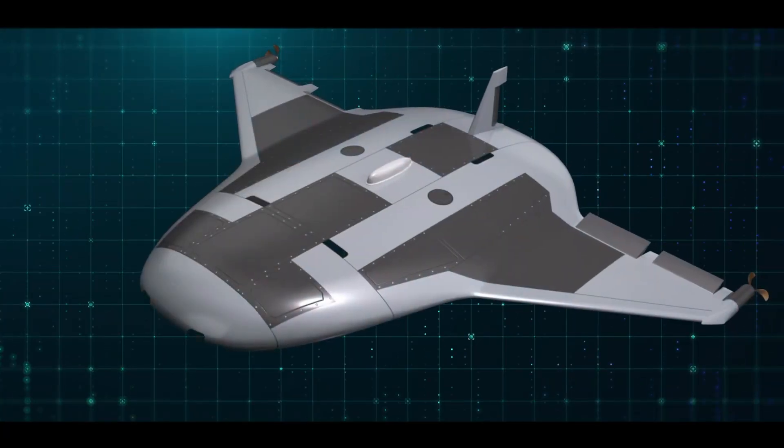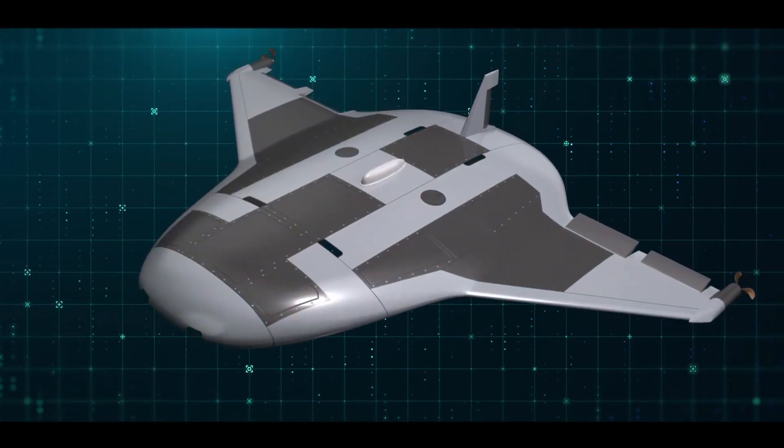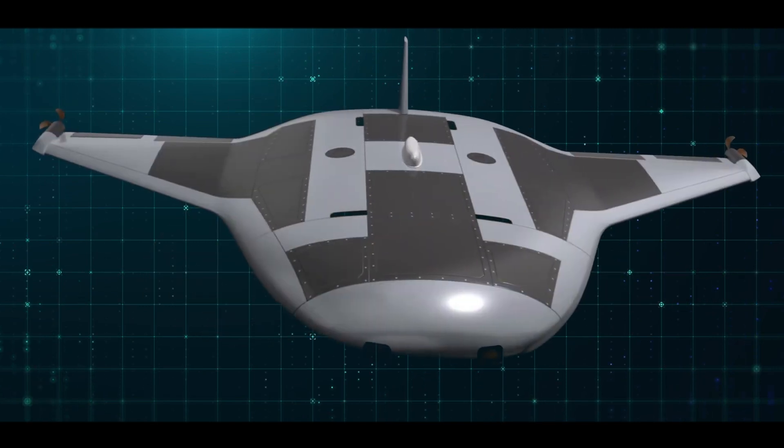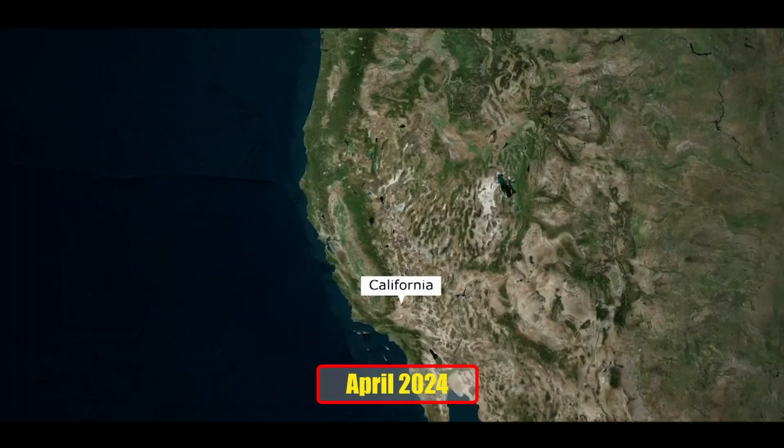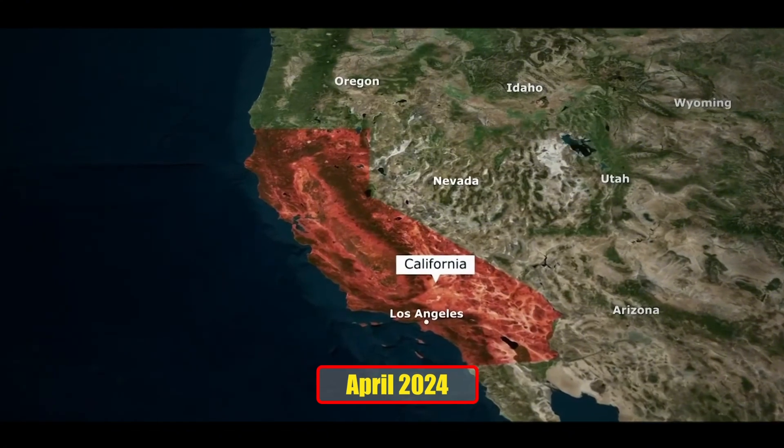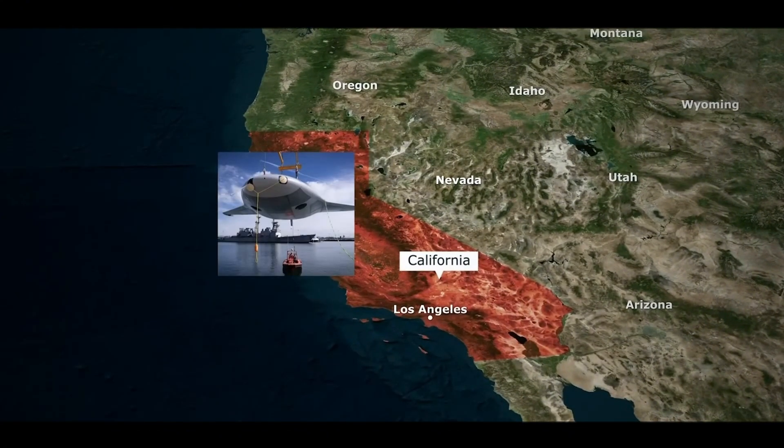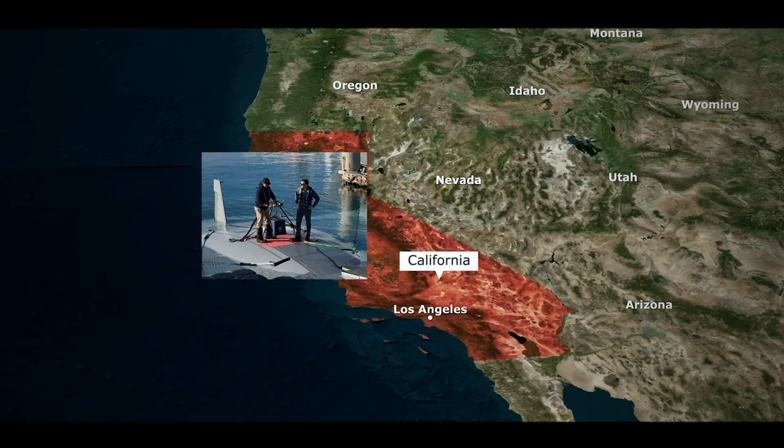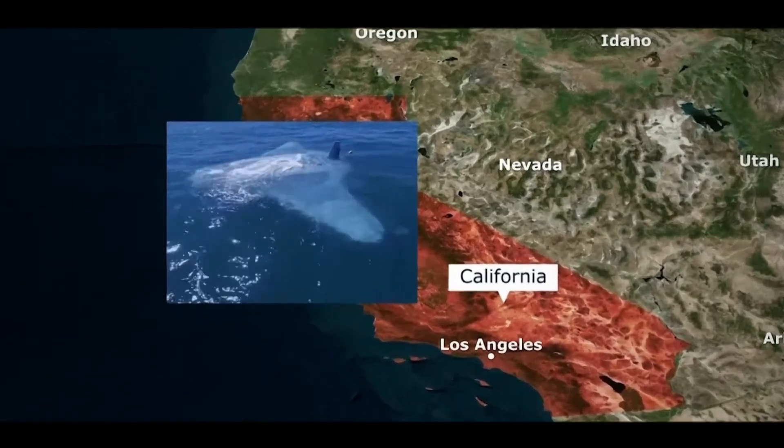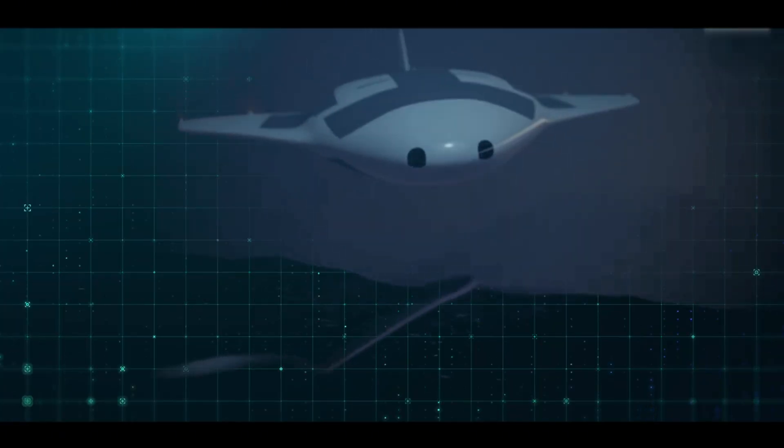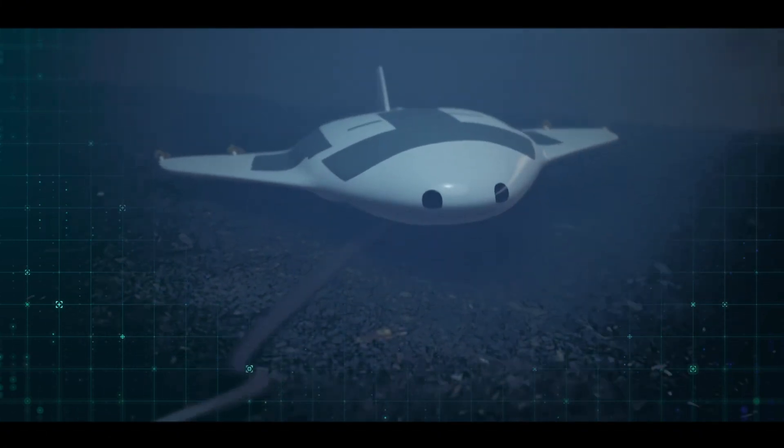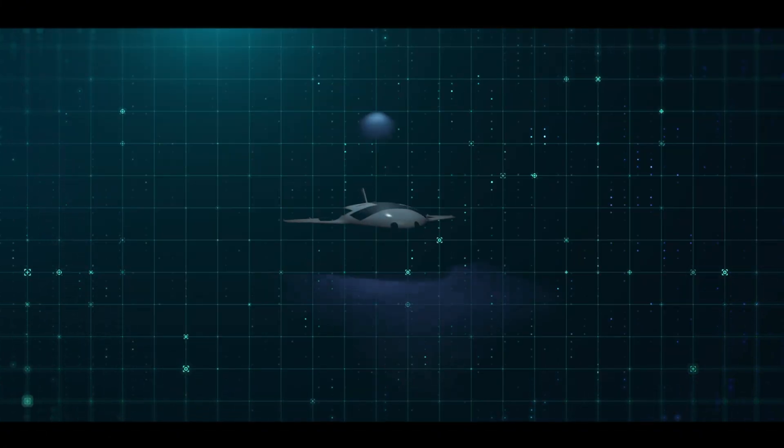The testing and deployment of the manta ray marked a significant milestone in underwater drone technology, showcasing its potential to revolutionize naval operations. In April 2024, Northrop Grumman unveiled the first working prototype after extensive testing off the coast of Southern California. These trials demonstrated the manta ray's advanced capabilities, including its modular assembly, seamless deployment, and effective underwater navigation. The prototype not only met but exceeded expectations, validating its design and operational efficiency.